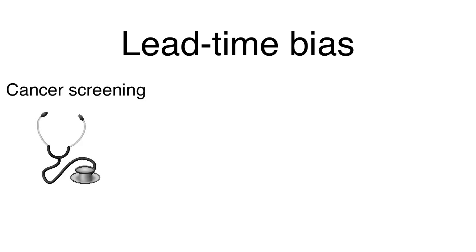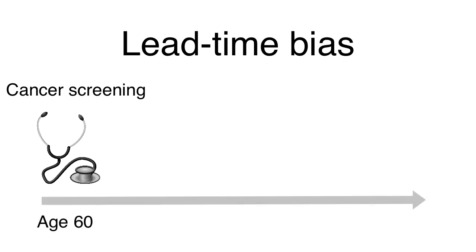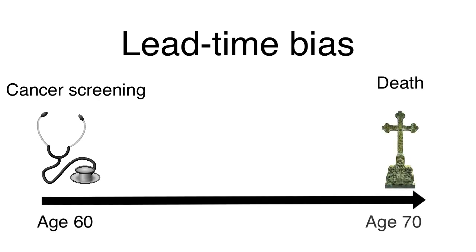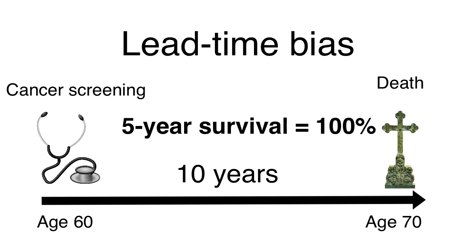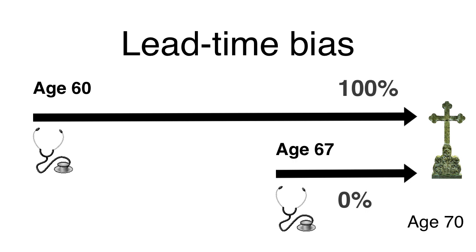Now imagine that everyone undergoes a cancer screening, and the screening catches cancer in all patients at age 60 — but at age 70, they still die. In this scenario, each patient survived for 10 years, so the five-year survival rate for this group is now 100%. Survival just went from 0% to 100% with the new screening test. Cancer patients now appear to live three times longer — 10 years instead of three — but each got treated as a cancer patient for seven-plus additional years.